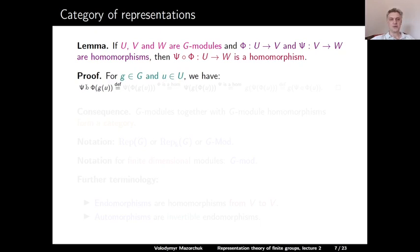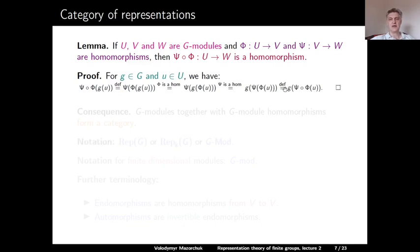By the definition of composition, this equals Ψ(Φ(g·u)). Since Φ is a homomorphism of G-modules, we can move g to the left, getting Ψ(g·Φ(u)). Since Ψ is also a homomorphism, we can move g past Ψ, obtaining g·Ψ(Φ(u)). Using the definition of composition, this is g·(Ψ∘Φ)(u), which exactly proves the claim of our lemma.